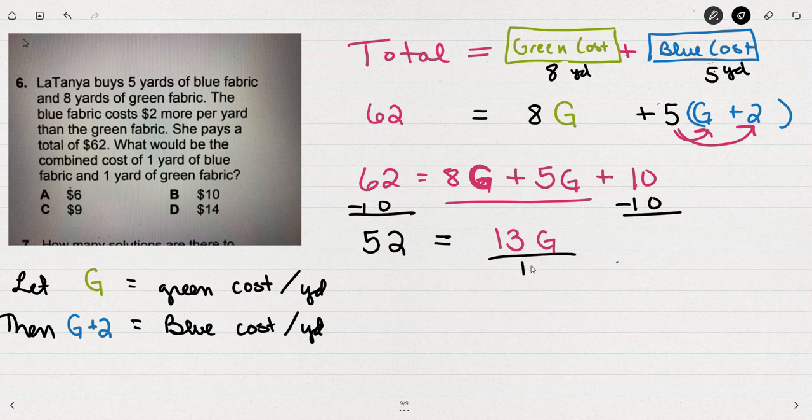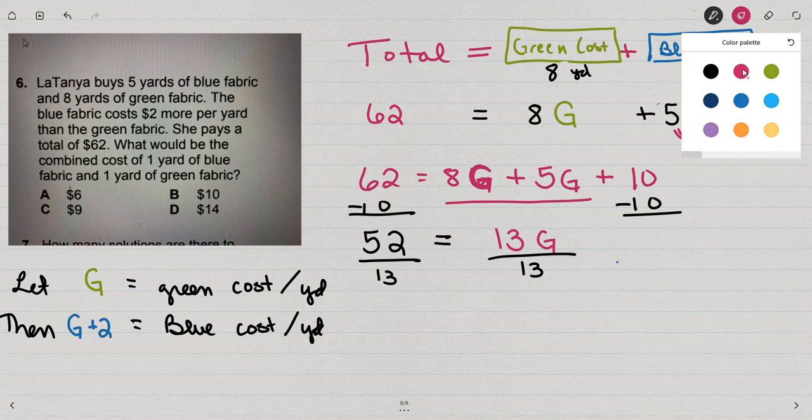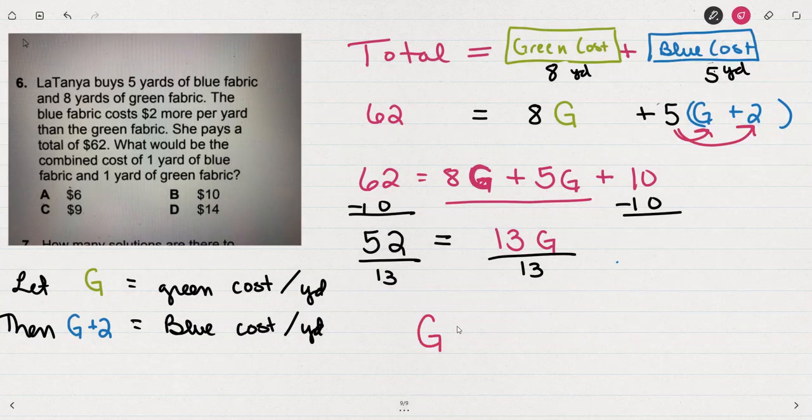I'm going to divide both sides by 13, and that gives me G equals 4.